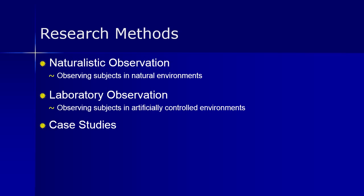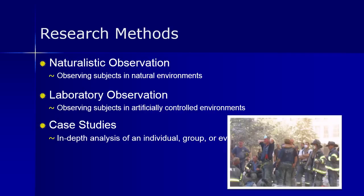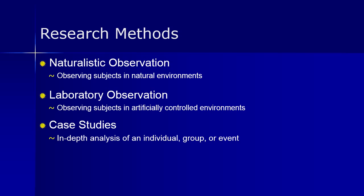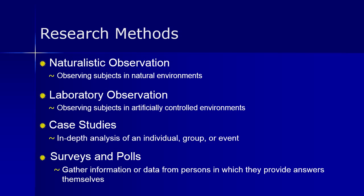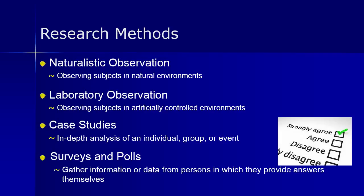Case studies are another research method, entailing analysis of a particular individual, group, or event. An example might be interviewing surviving firefighters from the 9/11 Twin Towers attack to see what impact that event had on their lives. The last method is surveys and polls, where researchers gather information from a population using questionnaires or interviews — for example, studying cigarette smokers and depression. Surveys are used quite a bit in psychology as well as marketing and politics.